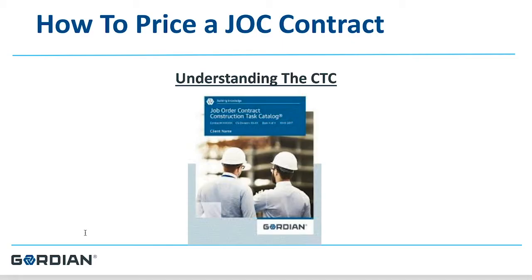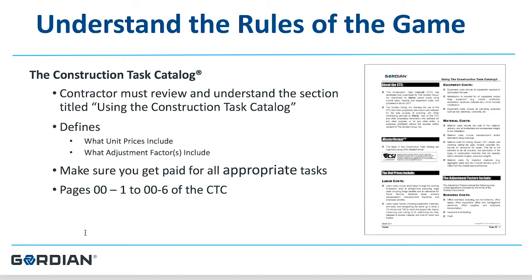There is a risk of a low adjustment factor — you might not make very much money on any of your projects. And if you bid too high, you may not be awarded too many job orders. As always in the competitive bid market, there's a sweet spot, so bid responsibly. How to price a JOC contract can be one of the biggest challenges when developing your response. Understanding how the CTC is put together is the first element, and understanding the rules of the game is another key element. Be sure to read the six to seven pages of the section titled 'Using the Construction Task Catalog' for more tips and rules of the game.